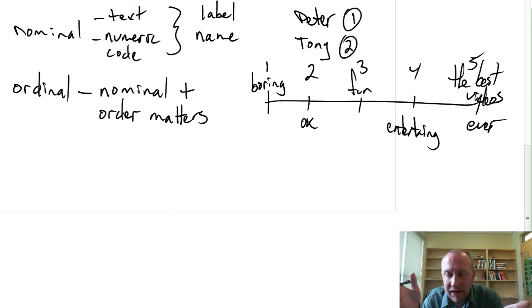It doesn't really change anything, but I can now compare different videos. These ones are entertaining, these ones are boring, these ones are fun, these ones are okay. I know that the order, the rank of those individual data points has some meaning. The best videos ever are more entertaining than the boring videos. So I've got some meaning now to the order of those individual data points.